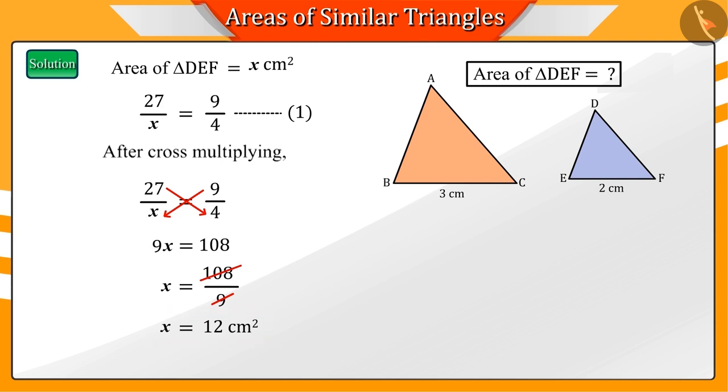So, we can say that the area of triangle DEF is 12 square centimeters.